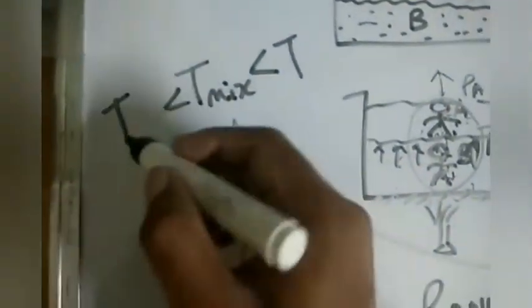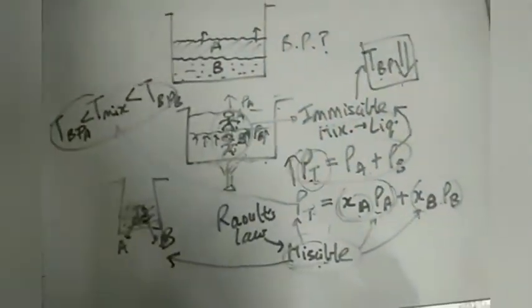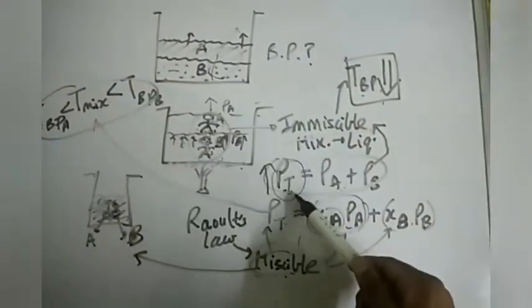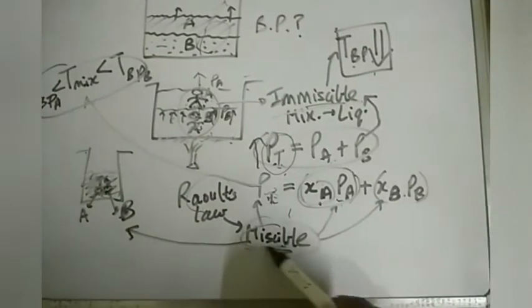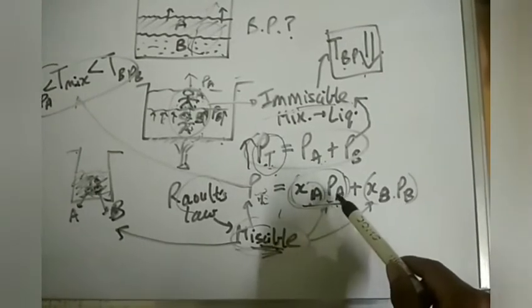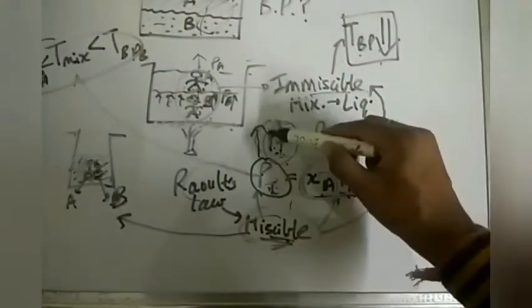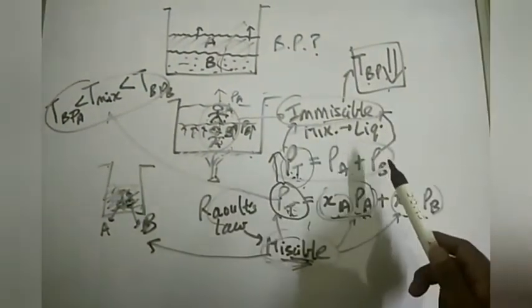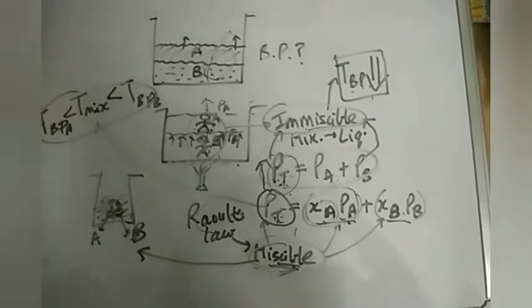Whether the mixture boiling point is closer to A or B depends on which component is more volatile. If A is more volatile, the boiling point of A is less. Overall, for immiscible liquids, the net total pressure is greater and the boiling point is lower. For miscible liquids, Raoult's Law applies: PT = Xa·Pa + Xb·Pb, which is less than in the immiscible case, and the mixture boiling point lies between the boiling points of the two pure components.